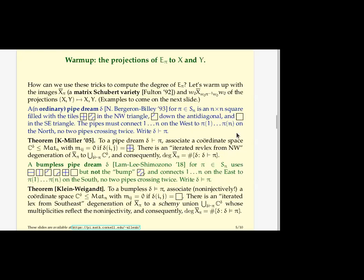They are connecting the south to the east instead of the north to the west. So that's what you see going on here. And they still insist that no two pipes cross twice. And surprise, these bumpless pipe dreams, there's again the right number of them, the degree of matrix Schubert variety. So there was a much tougher theorem than the analog of what Ezra and I did for the ordinary pipe dreams, due to two people in the audience.